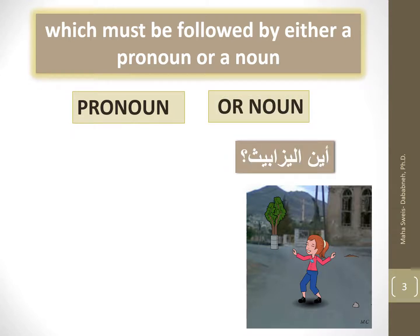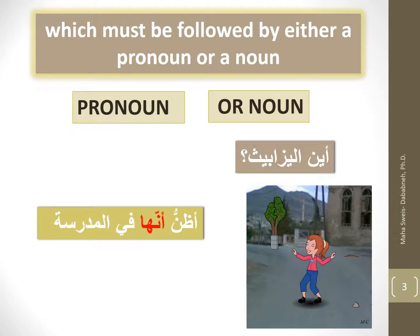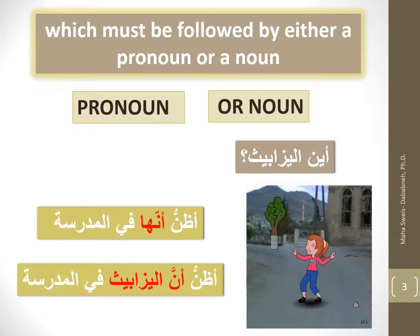For example: أين أليزابث؟ You are not sure where Elizabeth is, so you may give two answers. The first answer, you can say أظنّ أنّها في المدرسة — here I'm using a pronoun that follows أظنّ. Another answer could be أظنّ أنّ أليزابث في المدرسة. So you have two ways to answer.